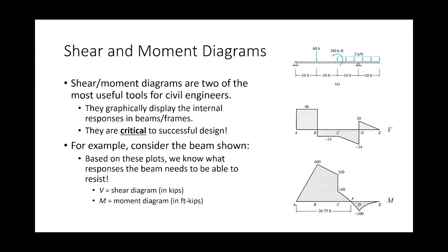In terms of notation, one deviation I'm going to make from the book is that the book tends to use the letter S for shear. I hate that because if you look at my S and my 5, I can't tell the difference. So I use the letter V for shear — we tend to be talking about a change in vertical forces — and whenever I use V, I'm talking about shear.